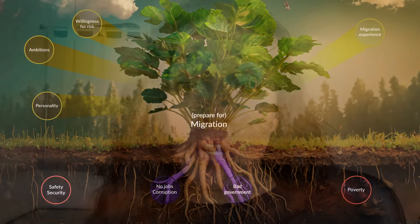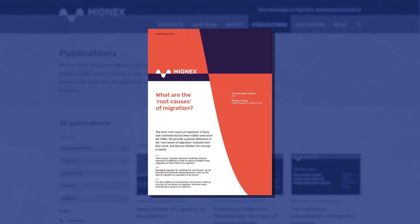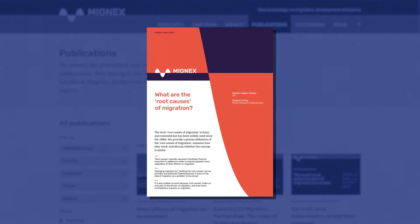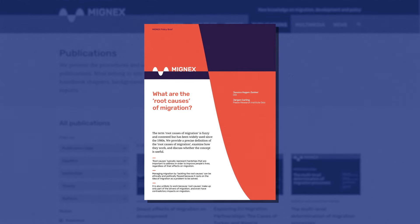While researchers found some general trends, they also saw contradictory patterns across different local areas. For example, environmental hazards increased migration aspirations in some areas, decreased it in others, and had no effect in most areas. There is not one consistent set of determinants of migration that holds universally. For more on the policy implications of this research, please check out the MIGNEX policy brief linked in the description below.